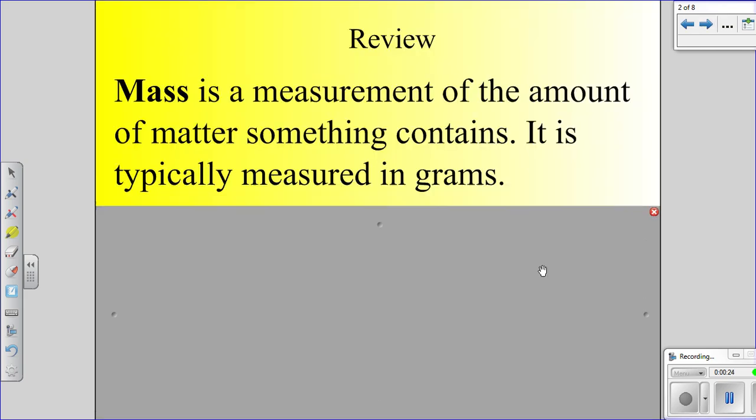The first one is mass. Mass is a measurement of the amount of matter something contains. It's typically measured in grams. We use the triple beam balance tool to measure the mass of an object.